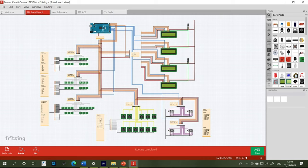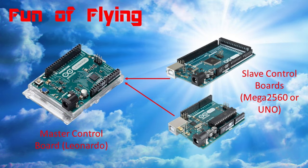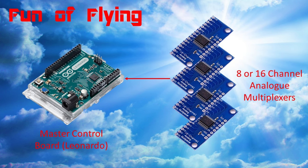With this in mind, there are two ways you can increase the number of microcontroller pins available to you. The first is to use a master controller and slave controller linked together, such as an Arduino Leonardo as the master and a Mega 2560 or even an Uno as the slave — I'm currently preparing a video on that. The second method is to use one Leonardo attached to one or more 8 or 16 channel analog multiplexers, and that's what we're looking at today.